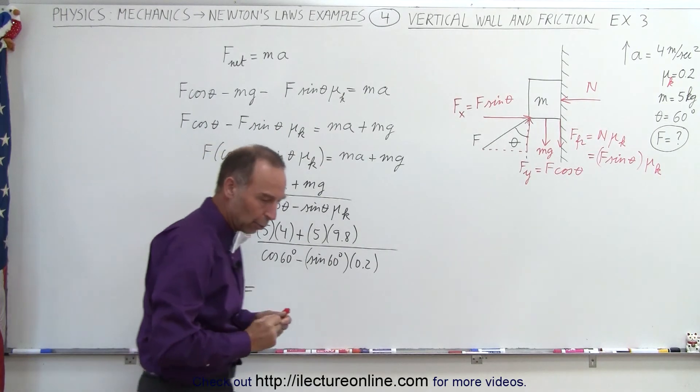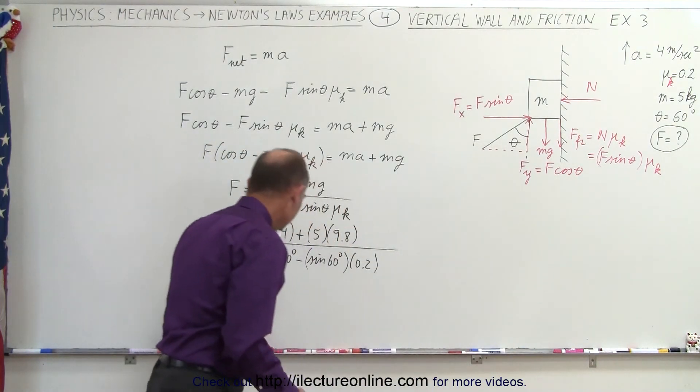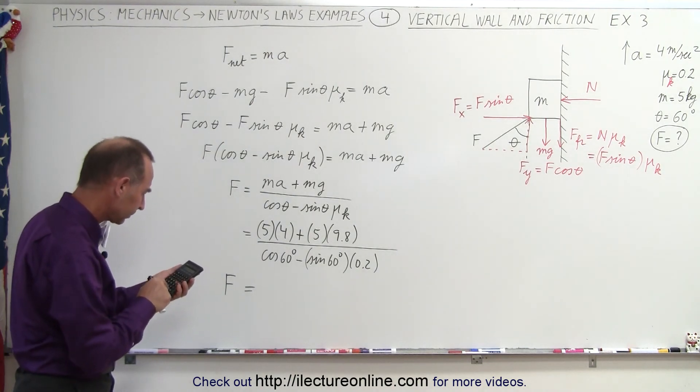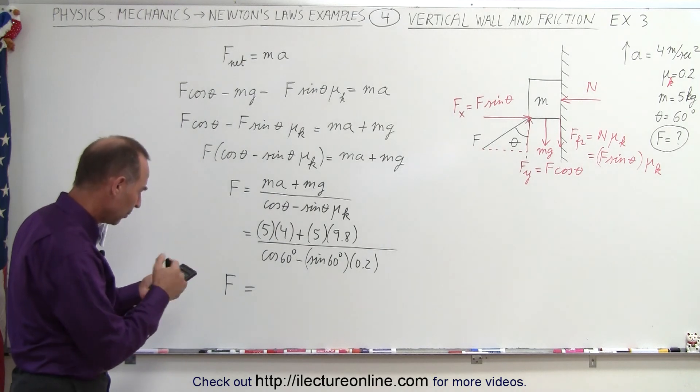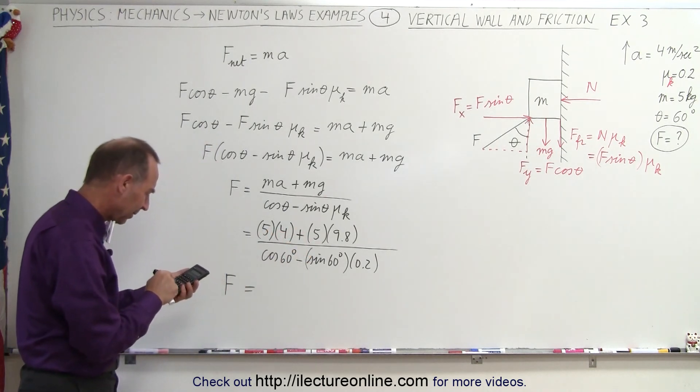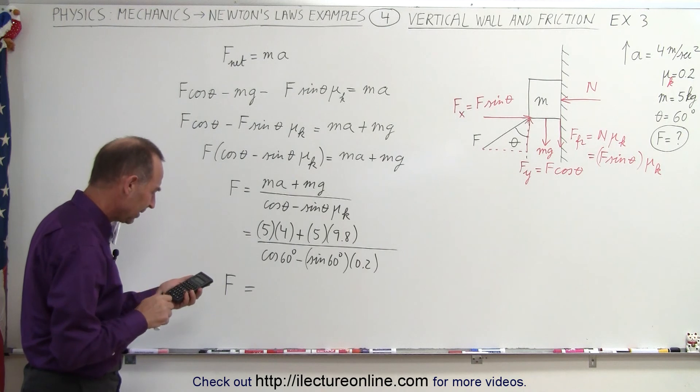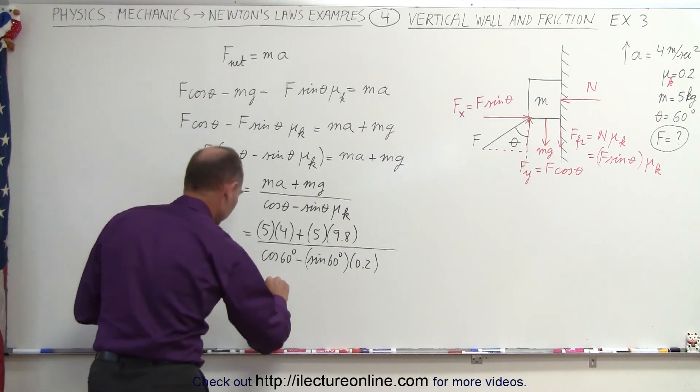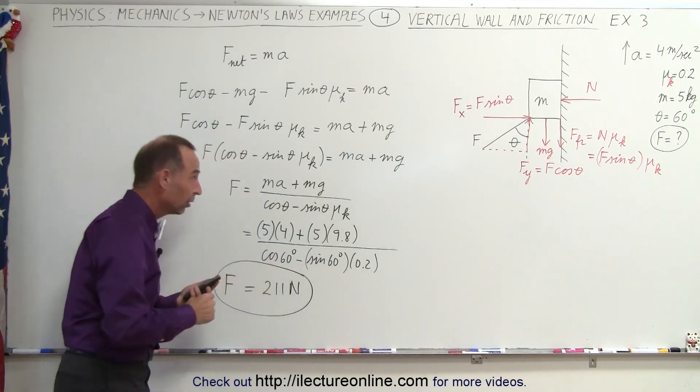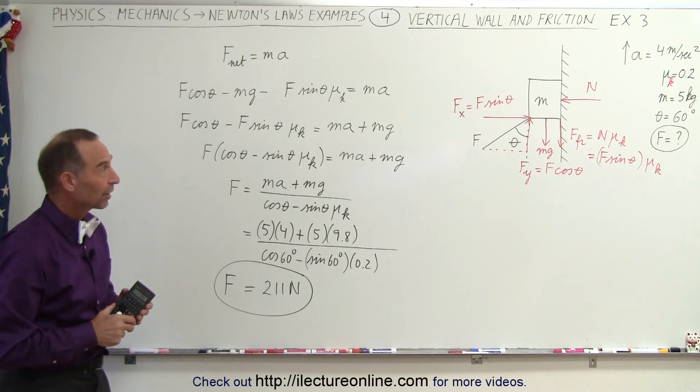And so the force required will be, and so we have 60, take the sine of that, times 0.2, I subtract that from 0.5, there was my mistake, and take the inverse of that, now we multiply that times, let's see here, 49, that would be 49 plus 20, that would be 69, so times 69, and that gives us 211 newtons, 211 newtons, which would be the force required to accelerate that block up by 4 meters per second squared.